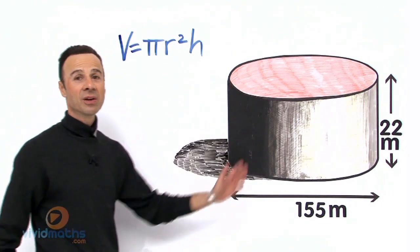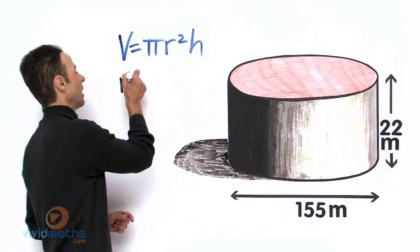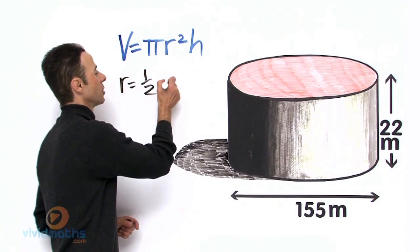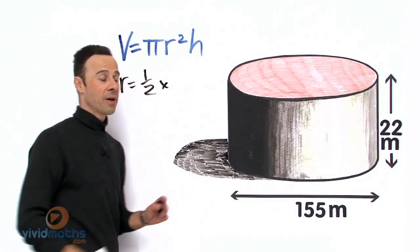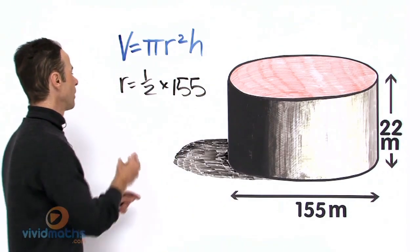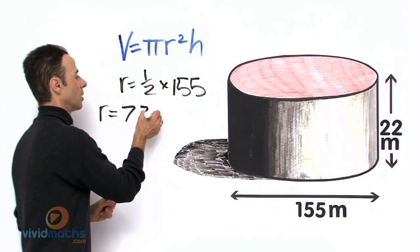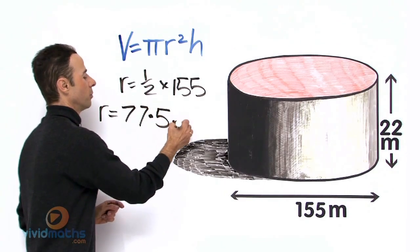So in order to get the radius, we need to halve that, chop it in half. So radius r equals one-half times 155. Half of 155, therefore radius equals 77.5 meters.